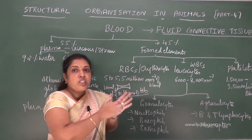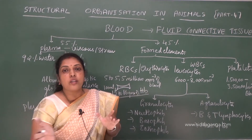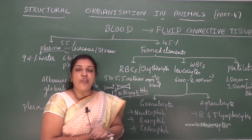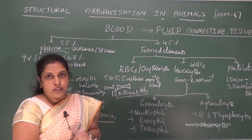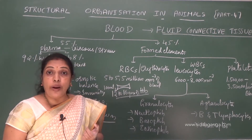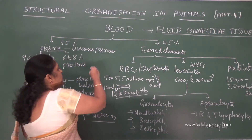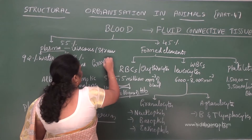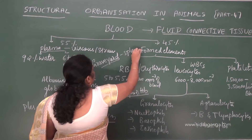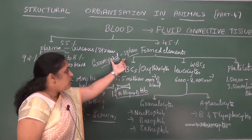Hemoglobin mainly helps in transporting respiratory gases like oxygen and carbon dioxide. Hemoglobin carries oxygen from alveoli to tissues and carries carbon dioxide from tissues to alveoli. The lifespan of RBCs is nearly 120 days. After 120 days, RBCs are destroyed in the spleen. That is why the spleen is called the graveyard of RBCs.